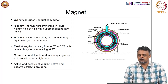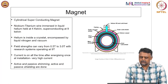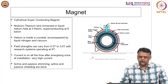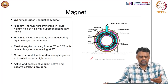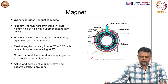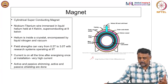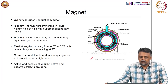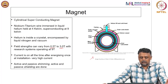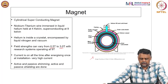As far as the magnet is concerned, it is the main component and also the most expensive. It is typically a cylindrical superconducting magnet. A cross-section is shown in the figure. It has a superconducting wire — in this case niobium titanium wire — immersed in liquid helium held at 4 Kelvin, though that wire is superconducting at 9 Kelvin. The helium is inside a cryostat encompassed by a vacuum and liquid nitrogen. Field strengths vary from about 0.5 tesla to 3 tesla, though 9 tesla magnets also exist for small animal biomedical imaging and research.